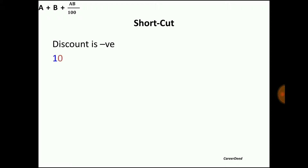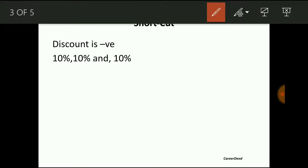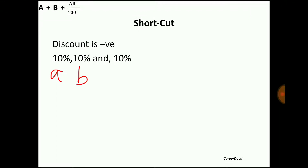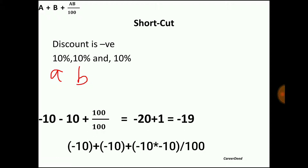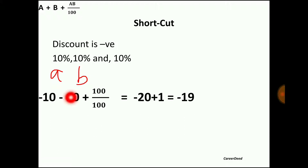Using the same example — find the single discount of 3 successive discounts: 10%, 10%, and 10%. Since discount is negative, take the first 10% as A and second 10% as B. Applying the formula: (−10) + (−10) + (−10 × −10)/100 = −10 − 10 + 100/100, which gives −19. So the actual discount for the first two is 19%, not 20%.